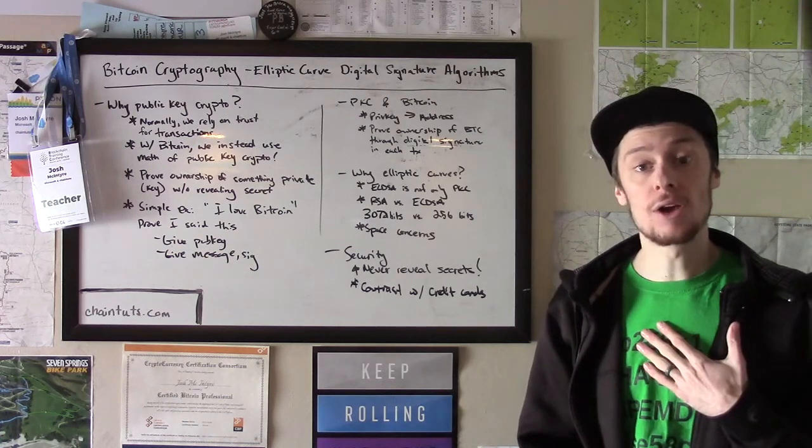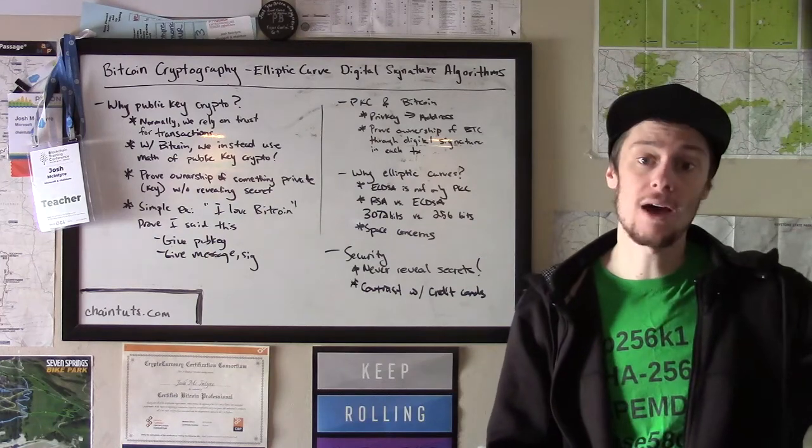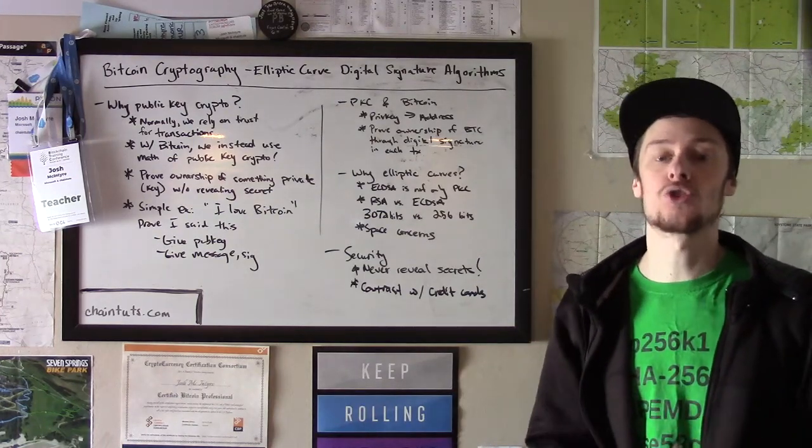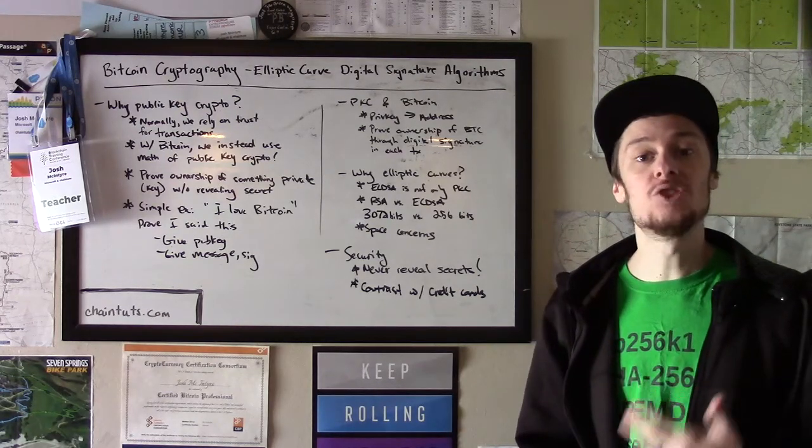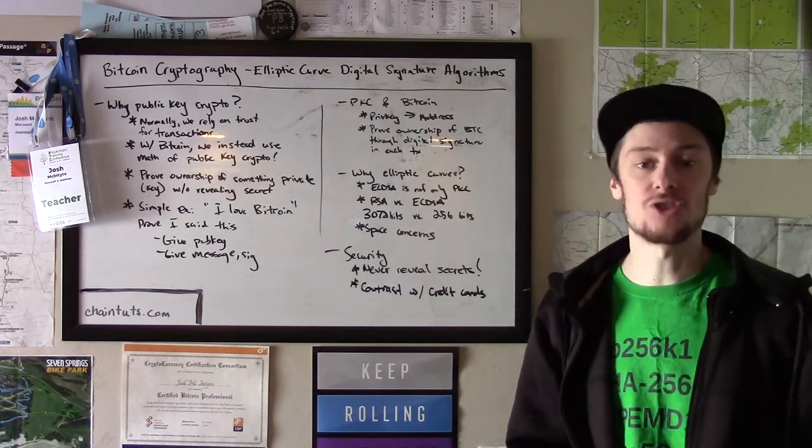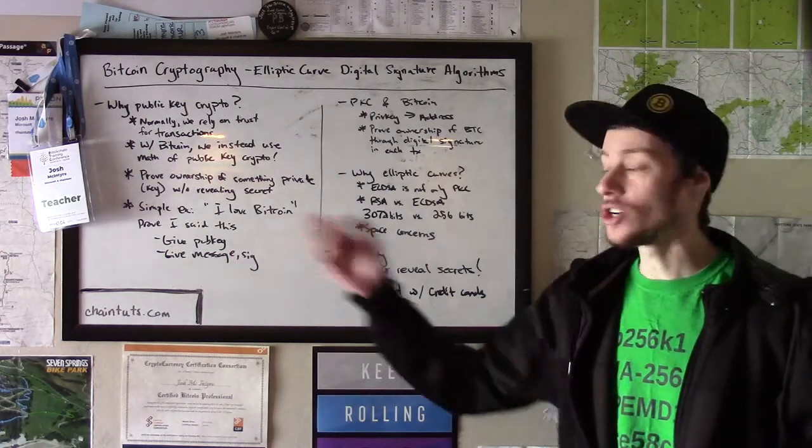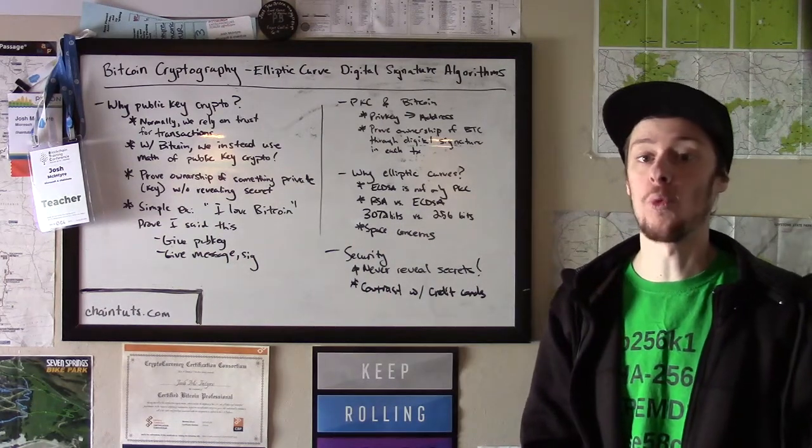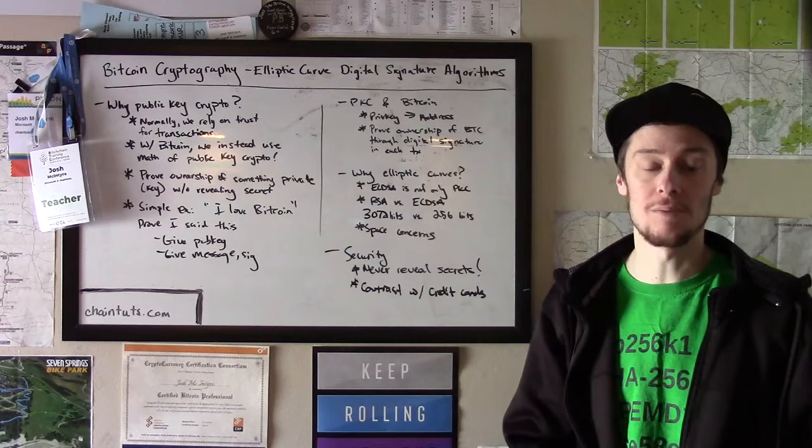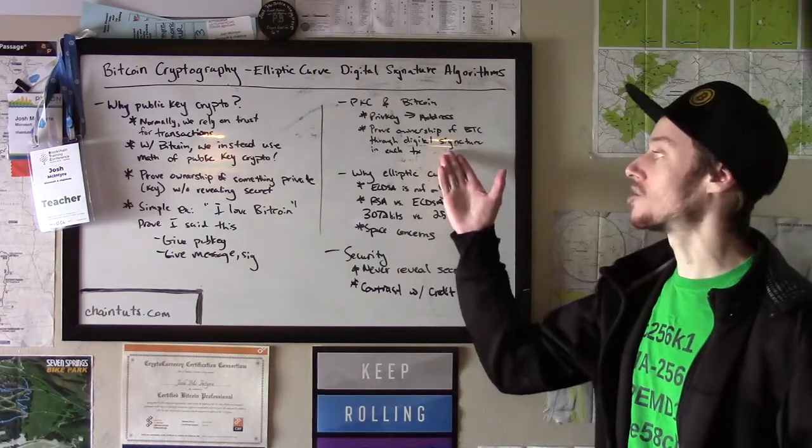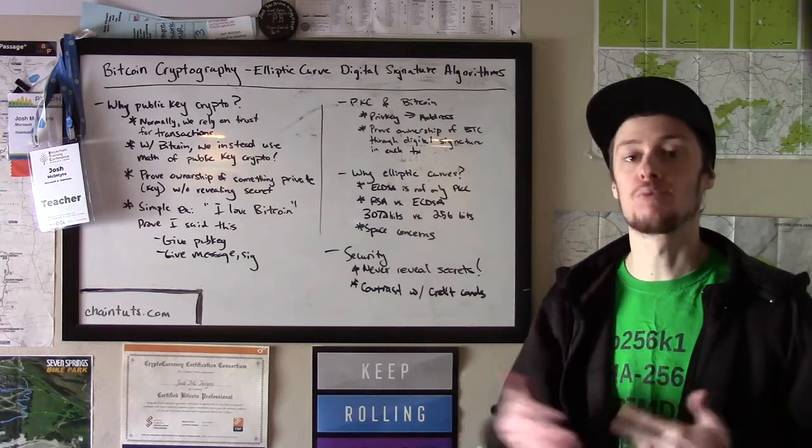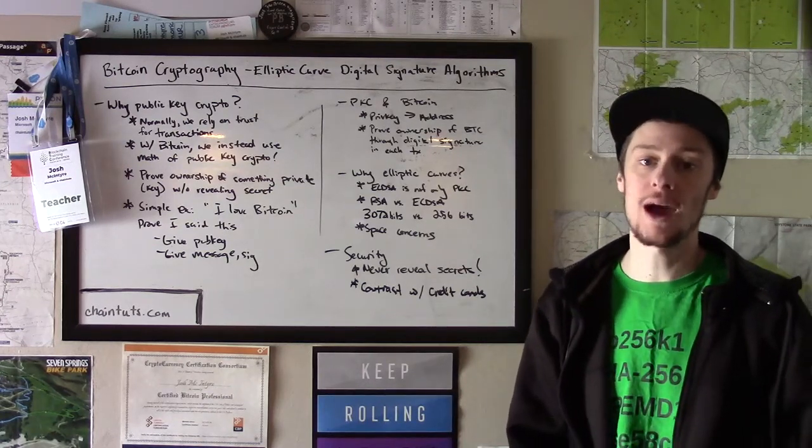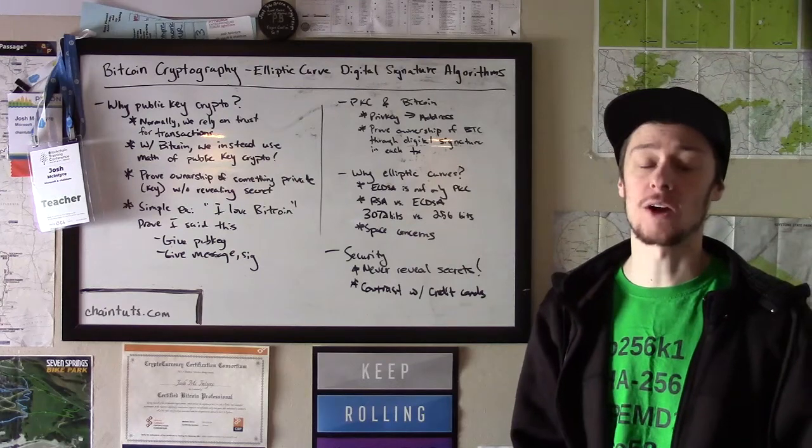Now, if I want to send that Bitcoin to someone else, say another friend, I create a new transaction using my wallet software. And what I do is I sign that transaction digitally, just like in our basic example with the message "I love Bitcoin." Instead, the message is a specially constructed transaction that is broadcast to the rest of the Bitcoin network using specific construction rules.